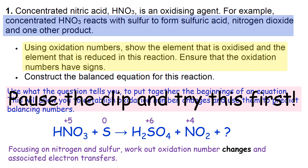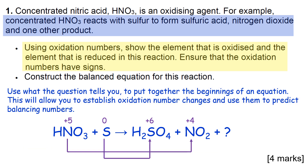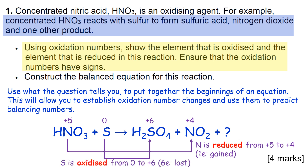Okay, welcome back - hopefully you've had a go at that and maybe you've done this kind of working. The nitrogen is clearly reduced because it's gone from plus five to plus four, which means one electron has been gained. The sulfur has obviously gone up from zero to plus six, so that's been oxidized and six electrons are lost.